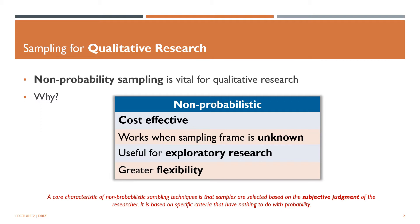But does that mean non-probability samples are not representative of the population? Well, not necessarily. But it does mean that non-probability samples cannot depend on the rationale of probability theory. We cannot know the probability that we have represented the population well. With non-probabilistic samples, we may or may not represent the population well, and it will often be hard for us to know how well we've done so.